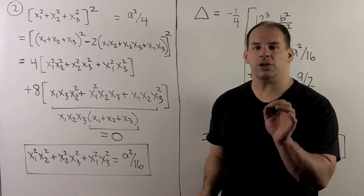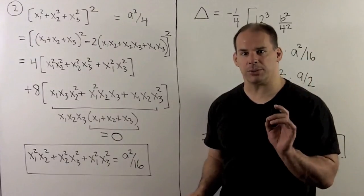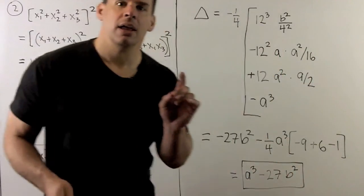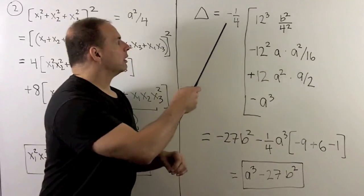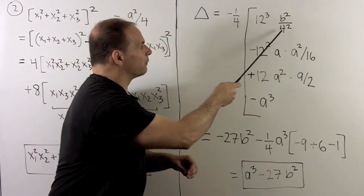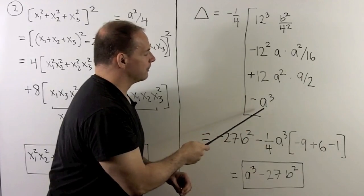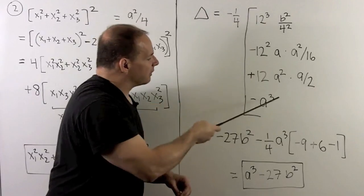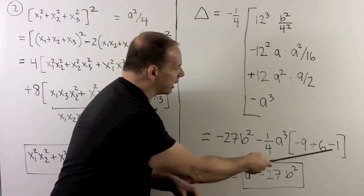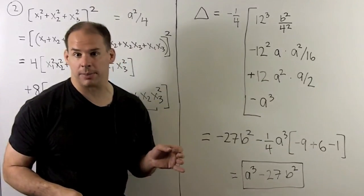Now, we'll return to the expression for the discriminant on the previous board and fill the terms in. That gives us, we have our -1/4. We're going to have b²/4², a²/16, a/2, and a³. When we tally everything up, we work it out, and we get our a³ - 27b² as promised. Thank you very much.